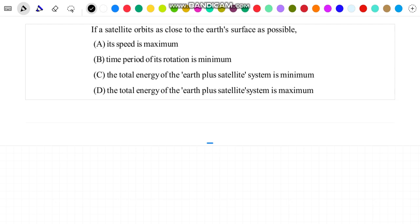Hello friends, let us try a problem based on gravitation in this video. If a satellite orbits as close to the surface of Earth as possible, we have to evaluate the correct alternatives from these four options.